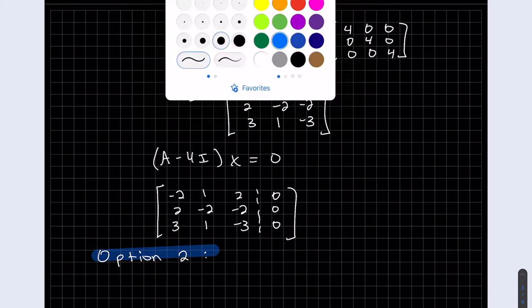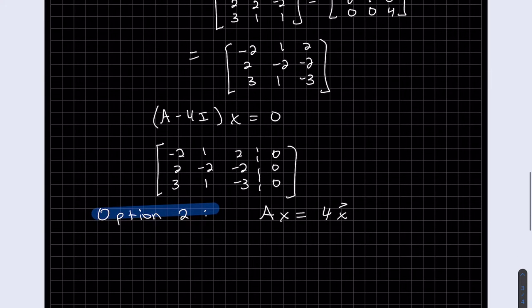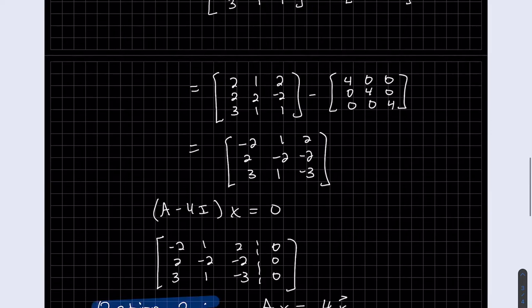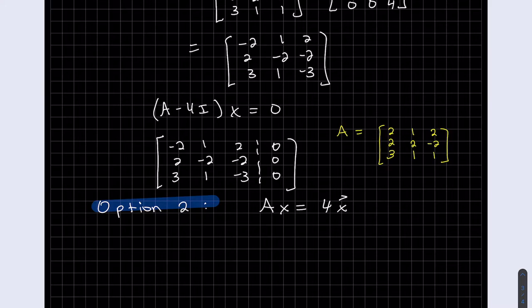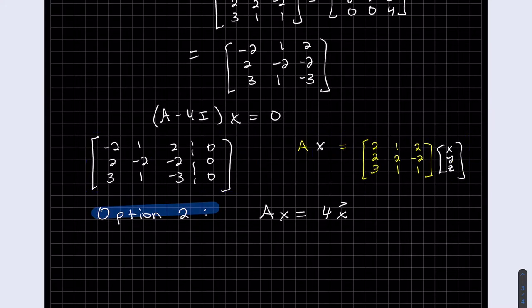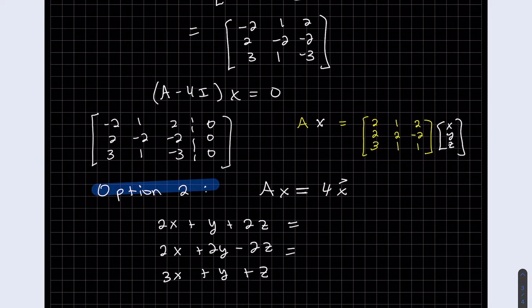So we were asked to solve Ax equals 4x. What we're going to do is just write that out. So Ax will be the equation—we can just multiply those out for Ax. This is Ax and this is 4x on this side.